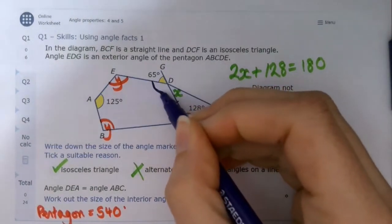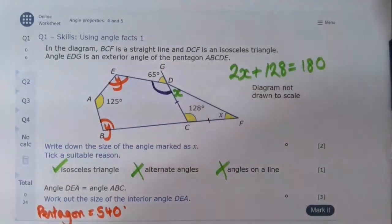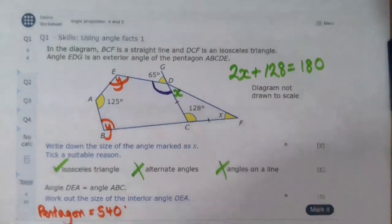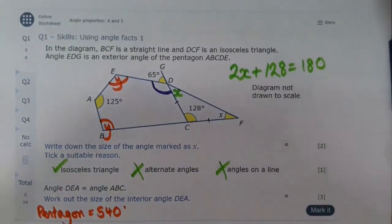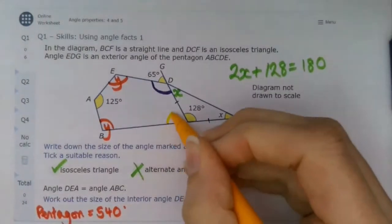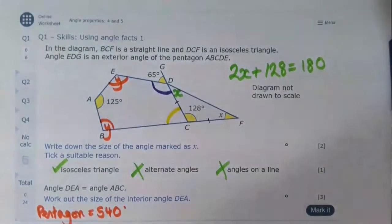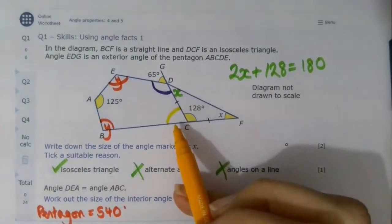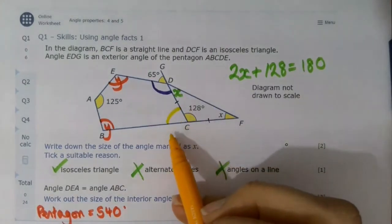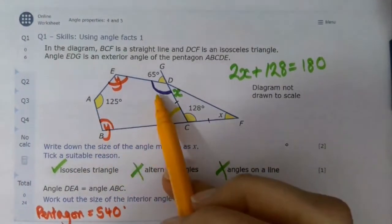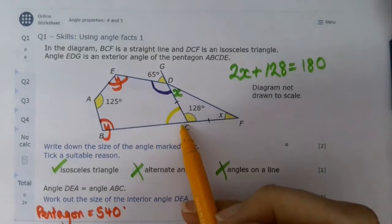Well, remember how we said that CDG was a straight line? That means we can find this angle here, that purple angle. And also it tells us that BCF is a straight line, which means we can find this yellow angle here.